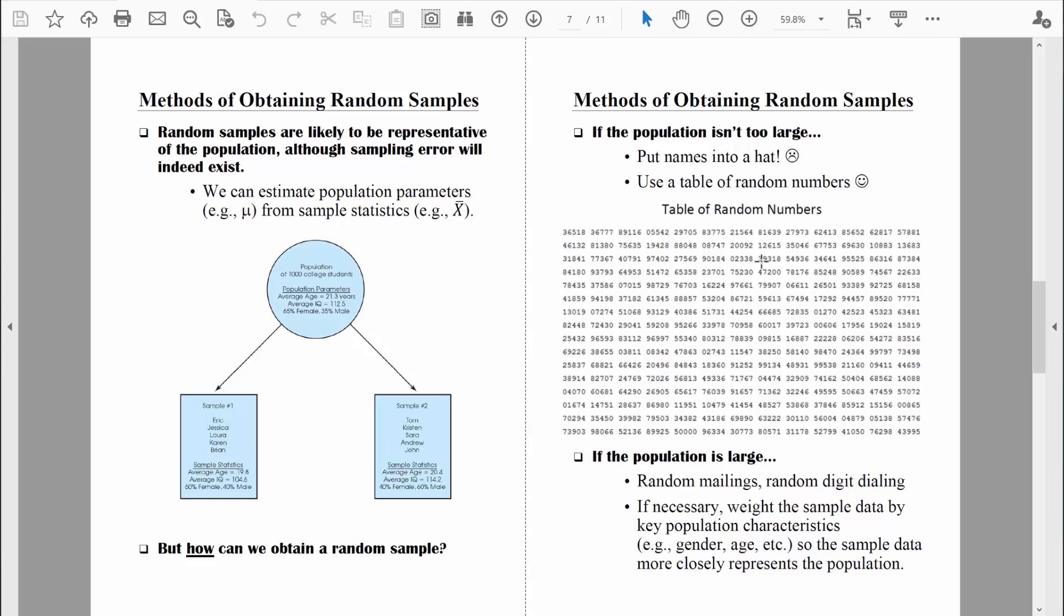83. We don't have that. Next number is 93. And the next two digit number is 18. Student number 18, you're the final person to be selected in our sample of five students.